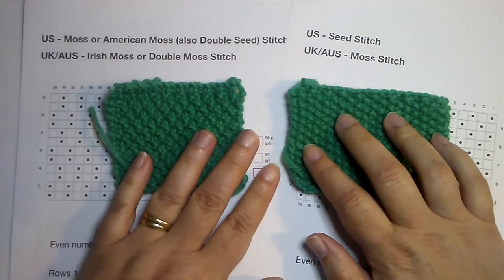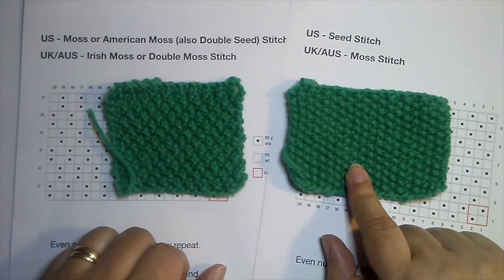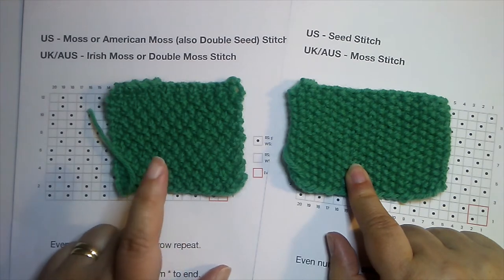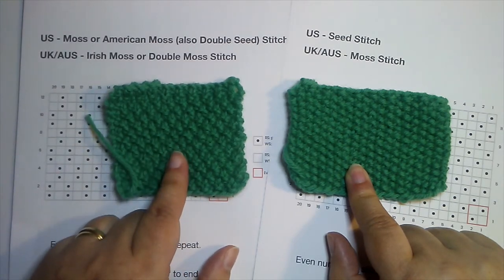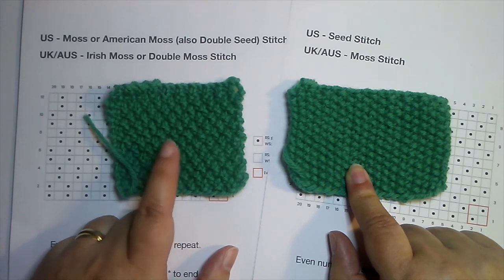Let's start with these two stitch patterns. In the US, this stitch pattern is referred to as seed stitch, and this one is referred to as moss stitch. It could also be known as American moss or double seed, but it's most often called moss stitch.